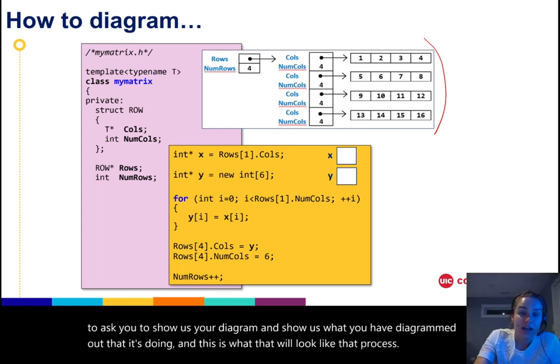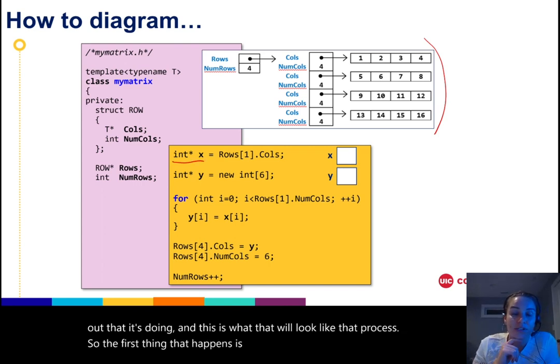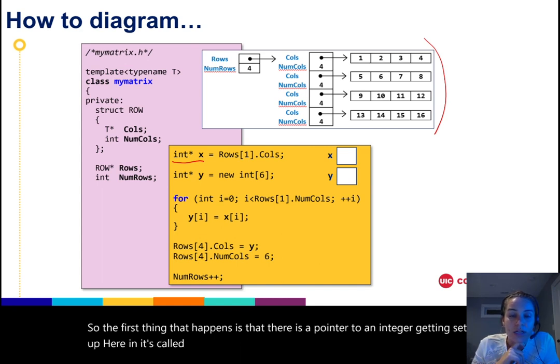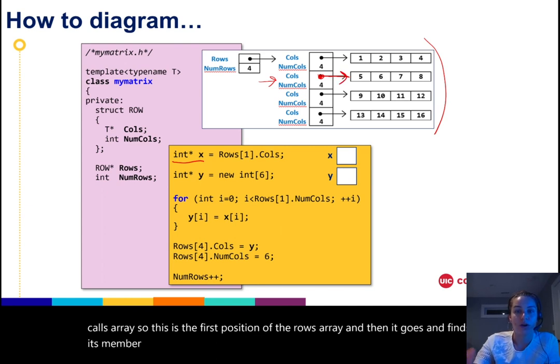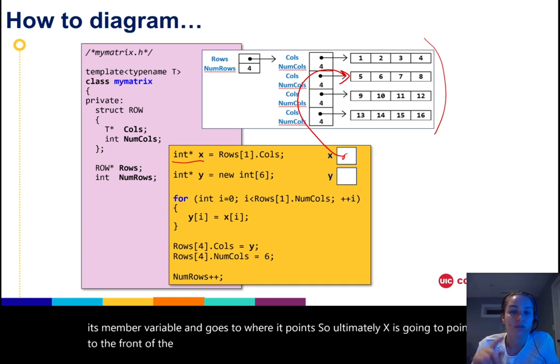So the first thing that happens is that there is a pointer to an integer getting set up here, and it's called x, and it's pointing to the rows array, the first position, and its cols array. So this is the first position of the rows array, and then it goes and finds its member variable and goes to where it points. So ultimately x is going to point to the front of the cols array in the first position of the rows array.